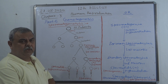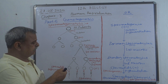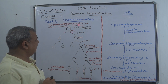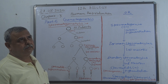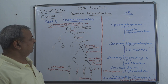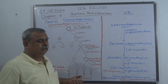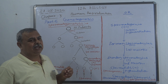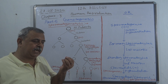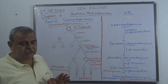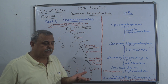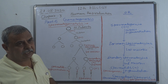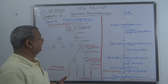Dear students, we are going to discuss gametogenesis. Under this, we will discuss spermatogenesis, or the formation of sperms or male gametes. Gametogenesis is the process by which male and female gametes are formed in the male and female body, in the testes and ovary respectively.